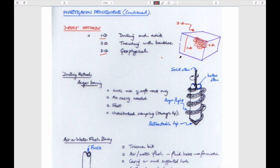In 1D borehole investigation, you take great samples, can take them to the lab and find all kinds of things out, but you only have them along that one line. In 2D trench investigation, you have a better picture because you can see contacts between beds, but you can't go very deep with a backhoe and samples aren't as good. With geophysical investigation, you don't get any samples at all but can cover a large volume.